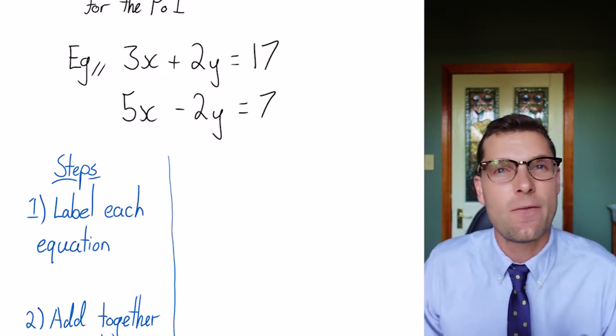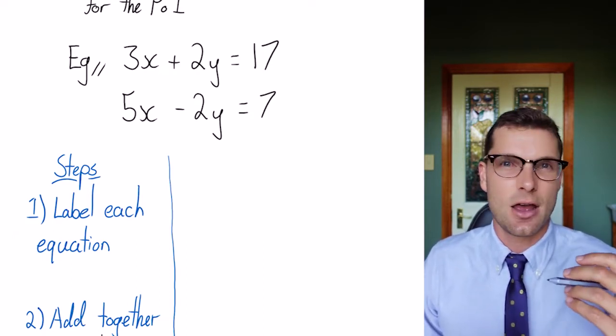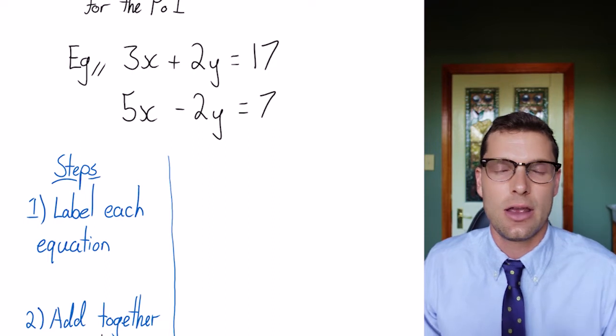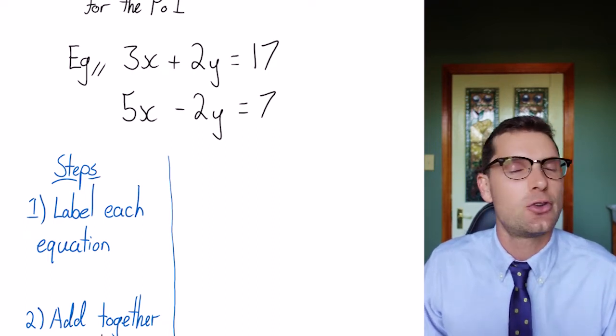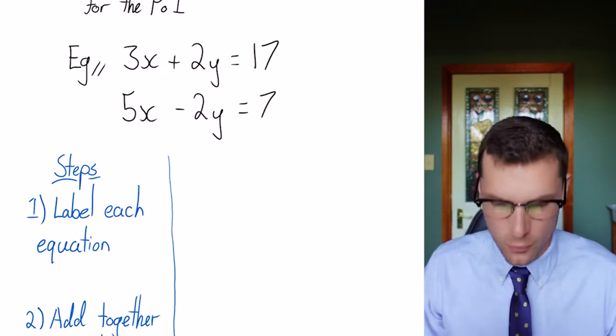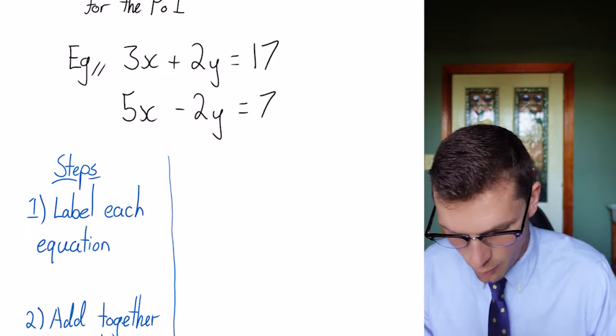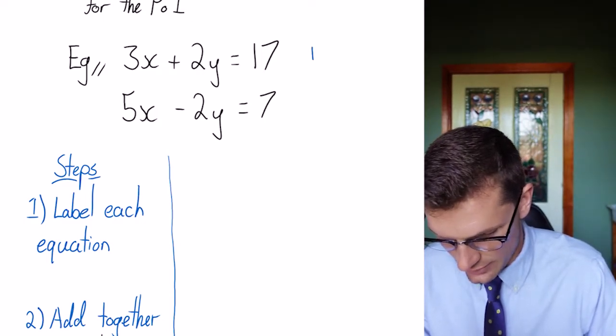So just like in substitution, the first thing that we've got to do is label our two equations at the very start. If you don't do this, you just lose a mark straight away, unfortunately. So I'm going to make the top one equation 1, and I'm going to make the bottom one equation 2.